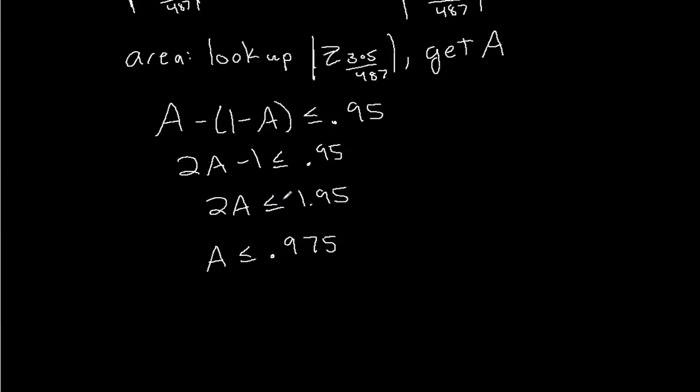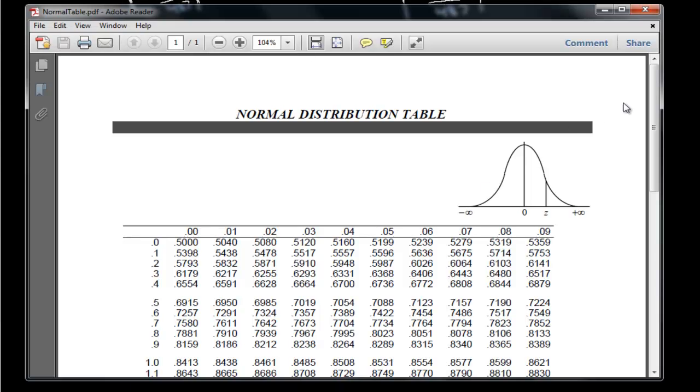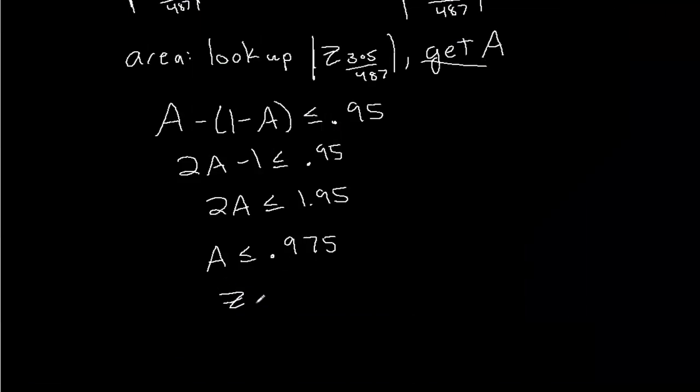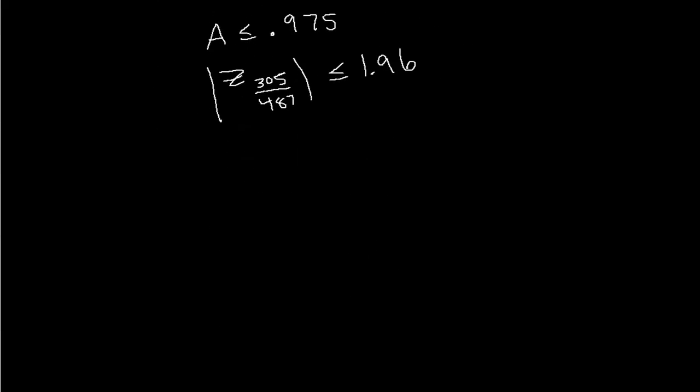So if a is less than or equal to 0.975, remember that's what we got from the normal distribution table when we looked up this non-negative z-score. If we get that our area in here is no larger than 0.975, here's 0.975. And we're at 1.9, and then if I go up, I'm at 0.06. So we're at 1.96, and that actually ends up being a z-score that's very commonly used, because the 95% confidence level is very commonly used. So we get that the absolute value of this z-score of 305 over 487 is no larger than 1.96.